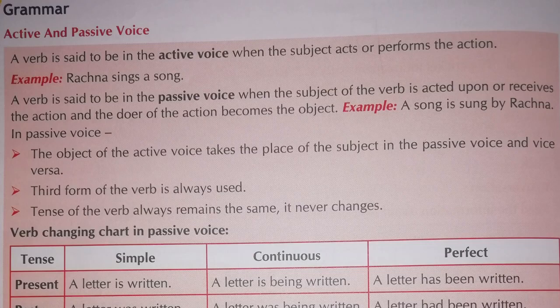A verb is said to be in the passive voice when the subject of the verb is acted upon or receives the action, and the doer of the action becomes the object. In passive voice, the subject becomes your object and the object becomes the subject.